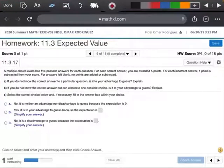Alright, so guys, this is number 6 out of 11.3, and it says a multiple choice exam has five possible answers for each question. For each correct answer, you're awarded five points. For each incorrect answer, one point is subtracted from your score. For answers left blank, no points are added or subtracted.